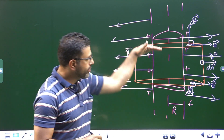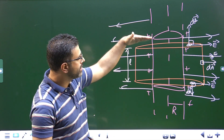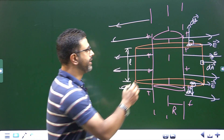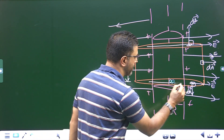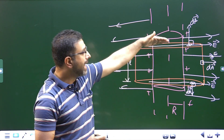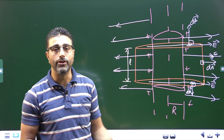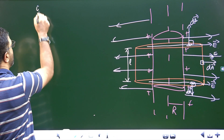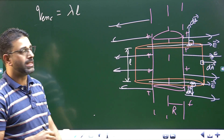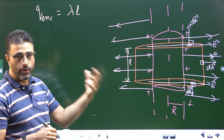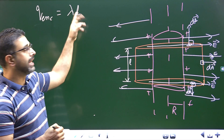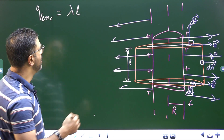Since the length of the Gaussian cylinder is L, it encloses a portion of the charged cylinder of the same length L. That portion contains a charge of lambda times L, because lambda is charge per unit length. So the charge enclosed by the Gaussian cylinder is lambda times L.